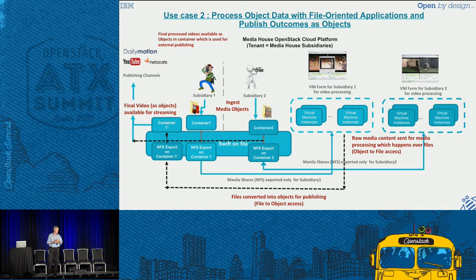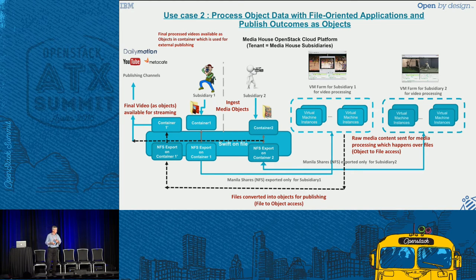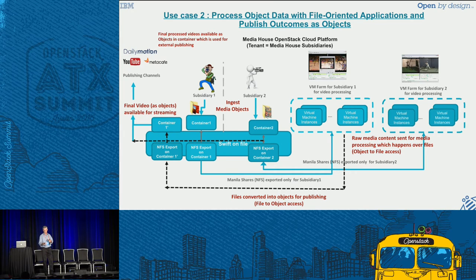In this example, we're using Manila to publish and export shares to different VM farms. Once it's there I can run my video editing software, make my changes, and save the data back into the file system, at which point I can publish it again through the object interface. One small point: in the first case with subsidiary two, I'm publishing the data back into the same container. In the subsidiary one case, I'm publishing it back into a different container. I just need to lay it out in the file system that way, and the objectizer process in Swift will make that available and visible as an object.